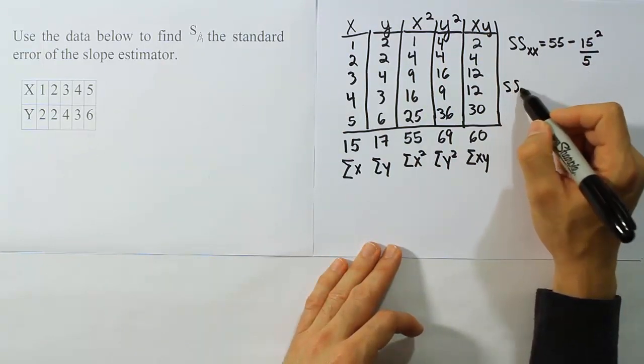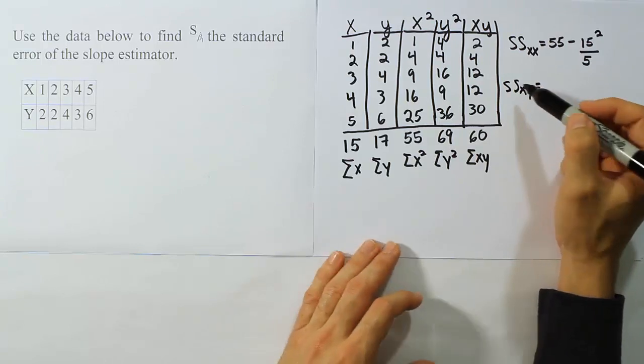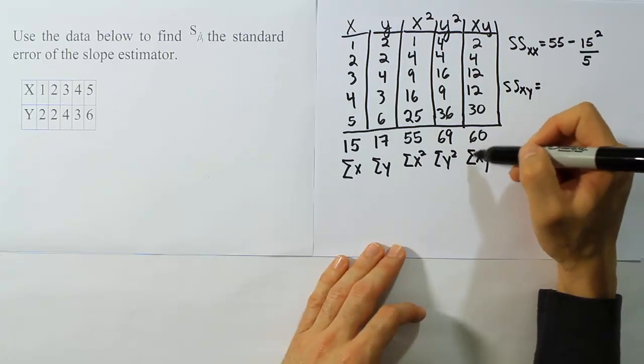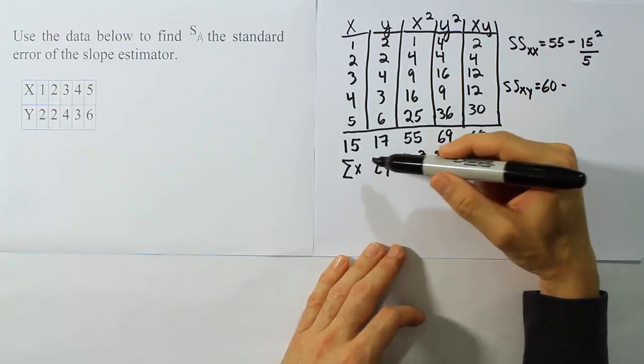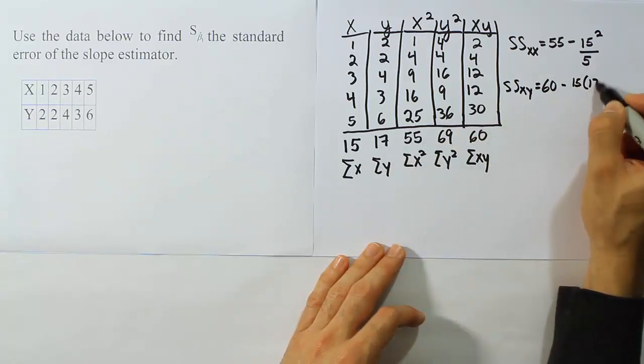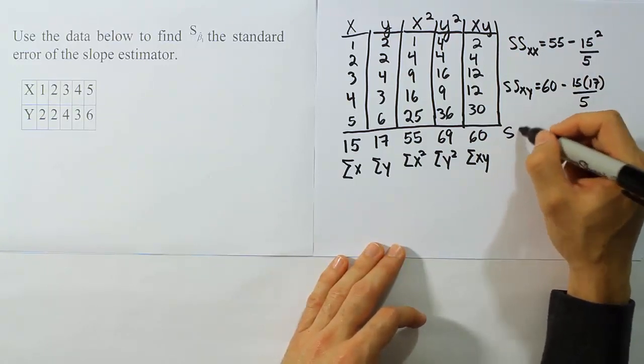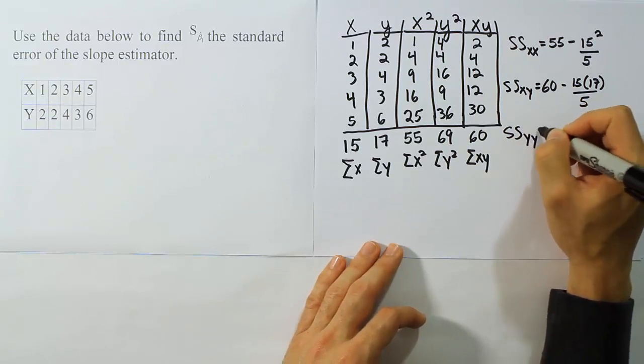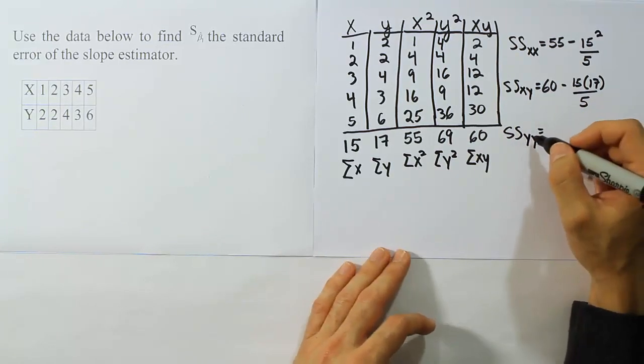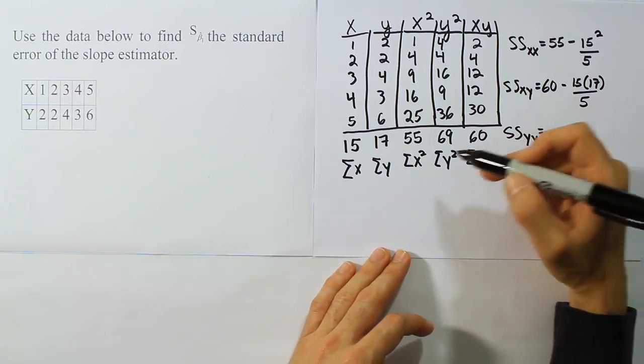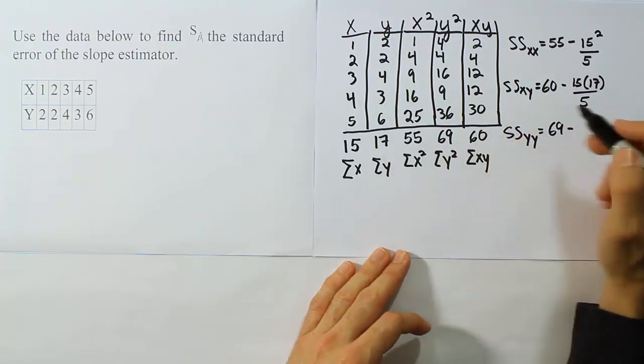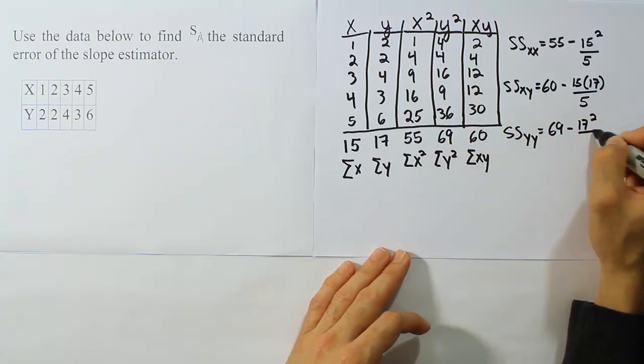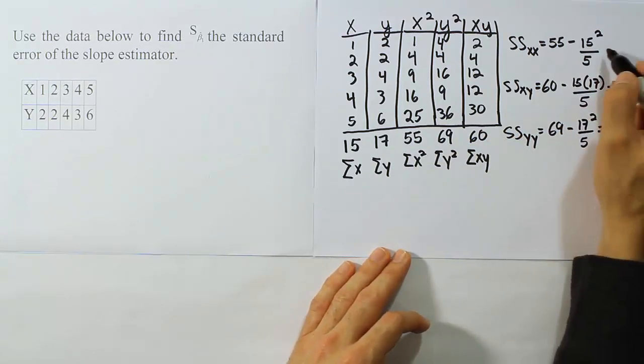For the next formula, sum of squares for x, y. We have to put x times y, the sum of x times y, which is 60, minus the sum of x times the sum of y. That'll be 15 times 17, divided by that same 5 from before. And then we'll have the sum of square for yy that needs to be done. So the sum of square for yy is the sum of y squared, which will be 69, minus the sum of y quantity squared, over 5.